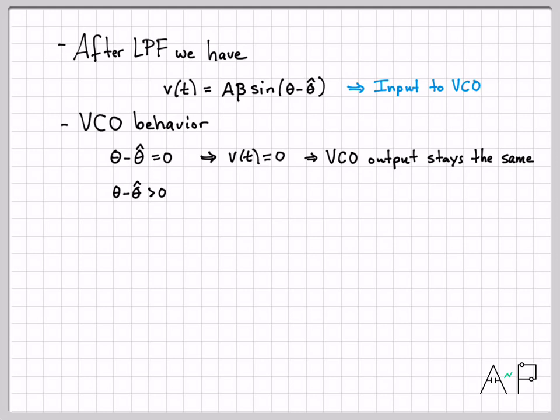On the other hand, if theta minus theta hat is bigger than zero, then sine of a quantity larger than zero is a positive number. Assuming these are positive numbers as well, then the input to the VCO is going to be a number larger than zero, which is going to tell the VCO you need to do an adjustment. You need to actually increase theta hat so you can make this get smaller. So when the input to the VCO is positive, we're actually going to start increasing theta hat to get closer to a match of theta to make this difference get smaller. And that's what we want. We're trying to track theta with theta hat. So if it's positive, I need to increase theta hat.